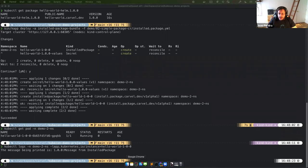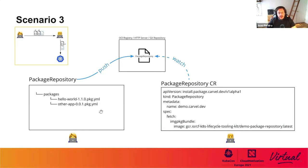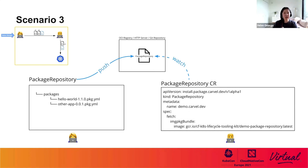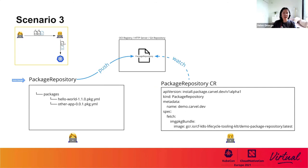That is very powerful. So this demo shows how the software consumer's workflow can be simplified by leveraging the InstalledPackage custom resource, because KApp Controller takes care of fetching, templating, and installing without you ever knowing that's happening. In scenario three, the software producer publishes various applications in different versions, and the consumer can decide which application and version to consume. Also, if updates are made available by the producer, the consumer wants to be notified automatically. Here we'll solve this using two new things: package repository and package repository CR.